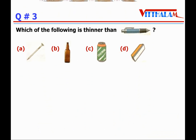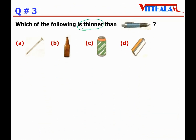Question 3: which of the following is thinner than a ball pen? यहां पर चार pictures हैं। Nail तो काफी thinner है compared to ball pen। Bottle मोटी है, cold drink tin भी thicker है, duster भी ball pen से thicker है। Therefore our answer is A — nail is thinner than the pen.